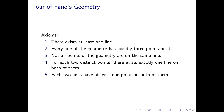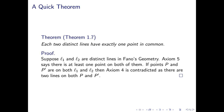Let's prove Theorem 1.7: each two distinct lines have exactly one point in common. Axiom 5 said that each two lines have at least one point in common, and Theorem 1.7 says there's exactly one. So if we suppose we have any two lines in Fano's geometry, L1 and L2, axiom 5 says there's at least one point on both of them. And if points P and P' are both on L1 and L2, then we violate axiom 4.